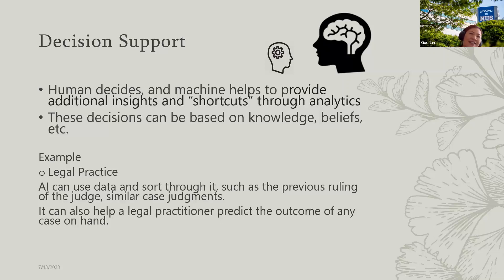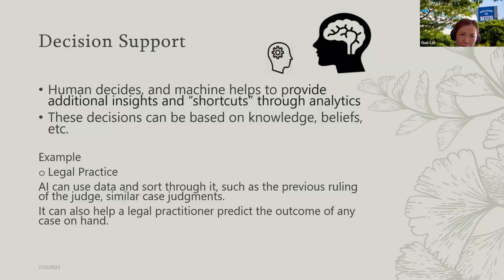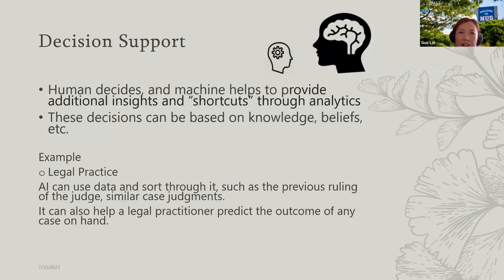In short, these are the three decision scenarios where we may need to leverage artificial intelligence: the first is automation, the second is augmentation, and the third is decision support. Before we use AI, we need to get it clear — what are the decision scenarios we are facing? Not every decision, whether in everyday life or at the workplace, should be automated. We have to work with artificial intelligence together to make decisions.